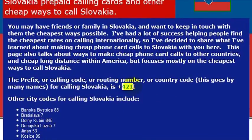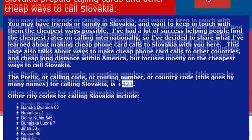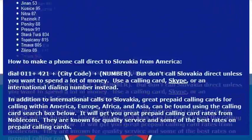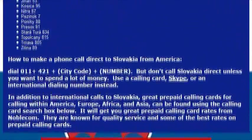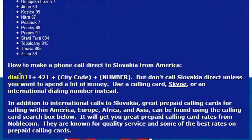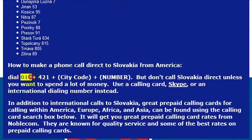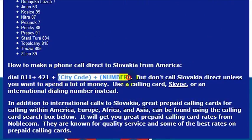What you want to do is know the country code for Slovakia, which is 421. To make a call to the country, you dial 011 — at least from the United States — then 421. So 011 gets you an outbound international dialing line, and then 421 gets you to the country of Slovakia, then you dial the phone number you're trying to reach.